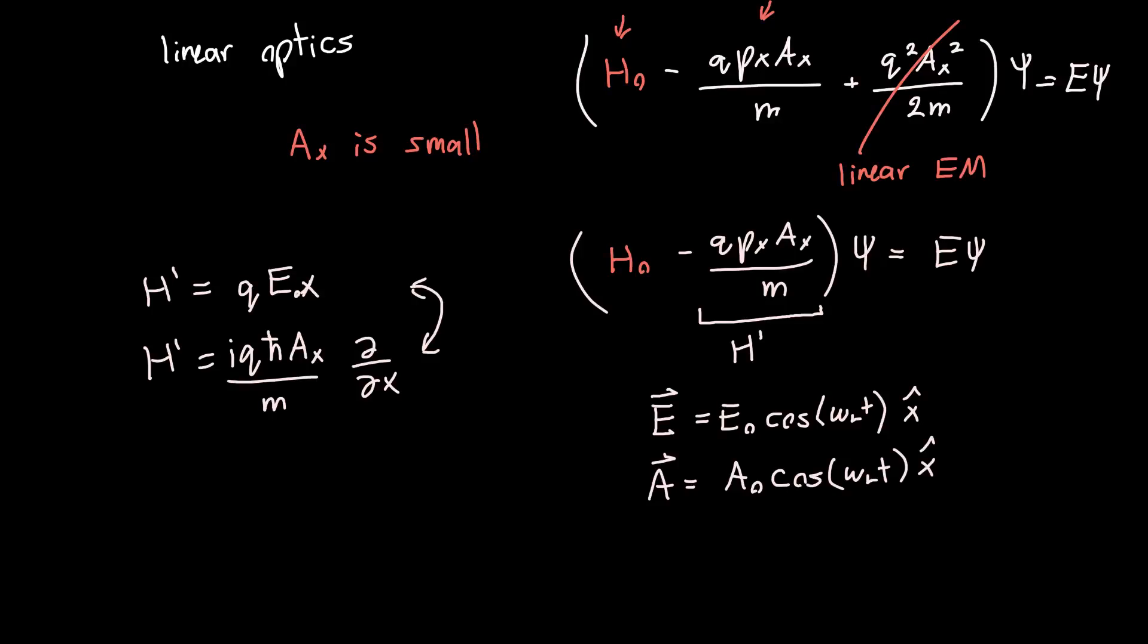And since E is just -dA/dt, that's just equal to, we're differentiating so we've got -A₀ωₗ times sine of ωₗt, still in the x direction. So this should actually be then a sine, so E₀ sin(ωₗt). And so just by staring at this we can figure out what E₀ is in terms of A₀ and our light frequency - they're just the same thing here. Or A₀ is just -E₀/ωₗ.